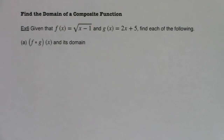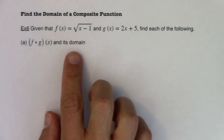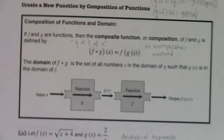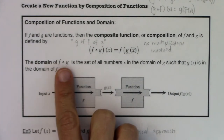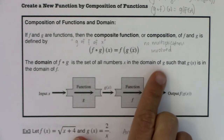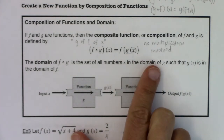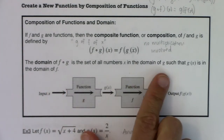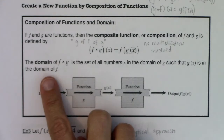Hey, I want to look at example six. We're going to compose functions analytically, but I want to circle back to that domain idea that I had mentioned when we first introduced composition of functions. The domain of your composite function is all the numbers in the domain of g, the innermost function, that allow g of x to be in the domain of f. So we start with the domain of our innermost function and see what applies to our outermost function.